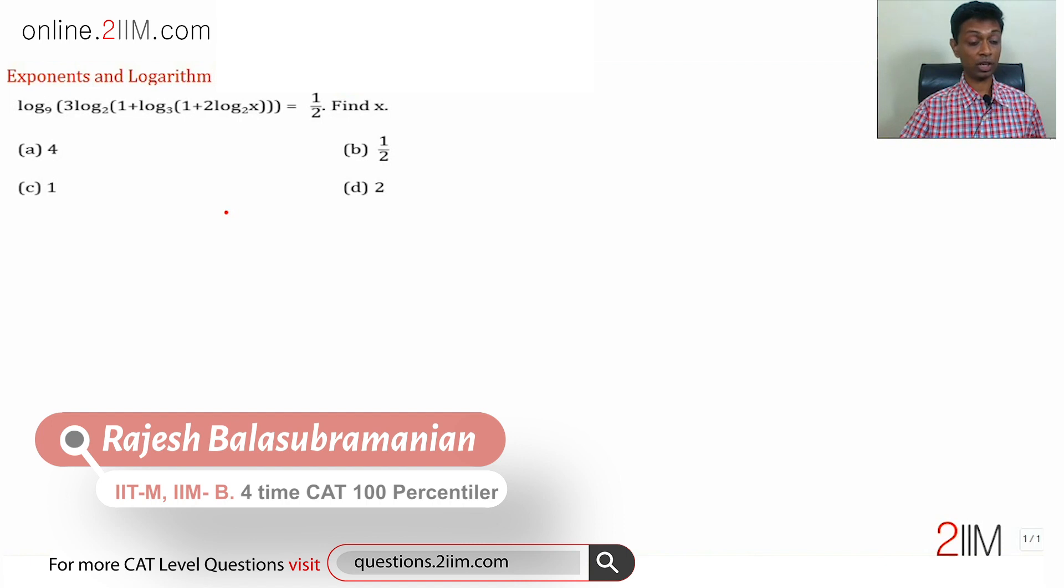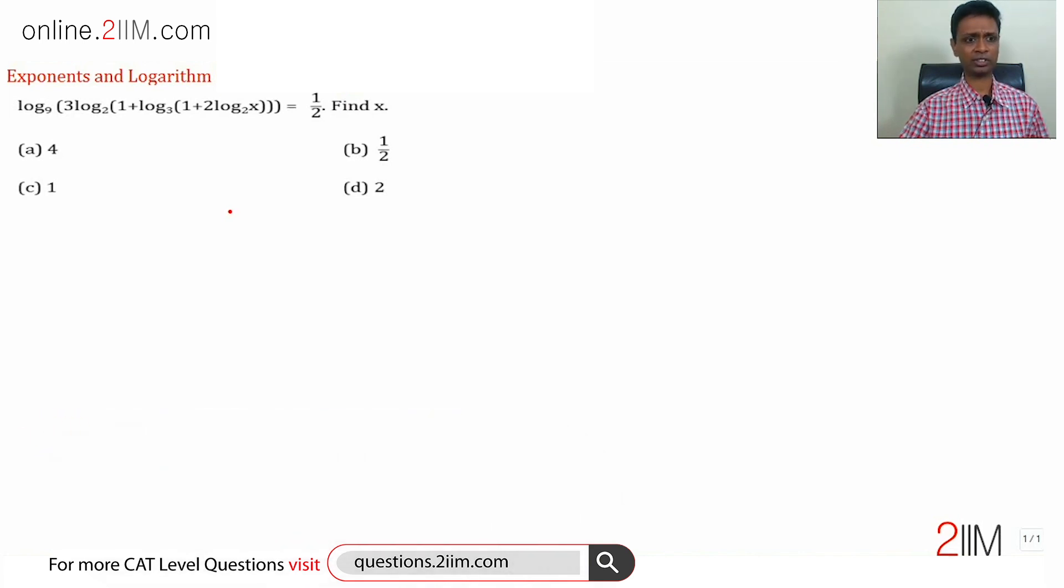Log to the base 9 of 3 log to the base 2 of 1 plus log to the base 3 of 1 plus 2 log x to the base 2 is 1 by 2. Find x. This seems like a very convoluted long-winded question.